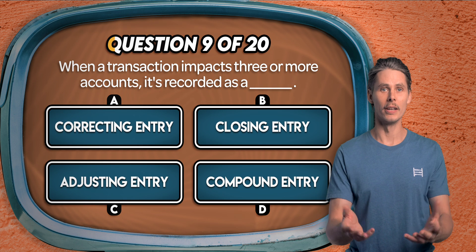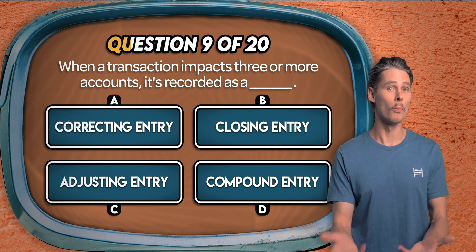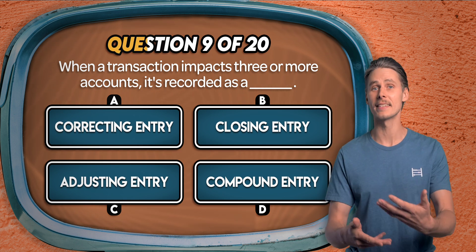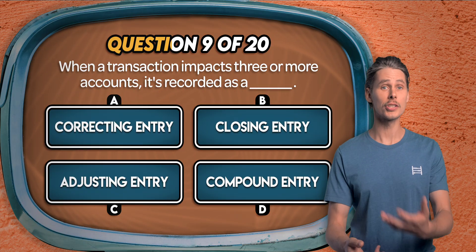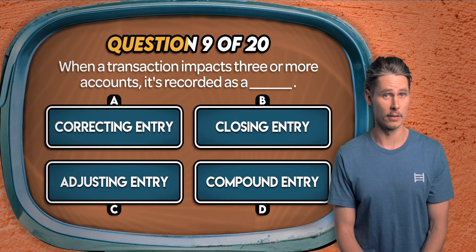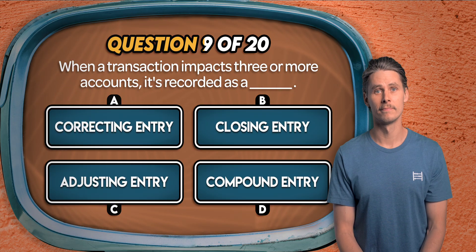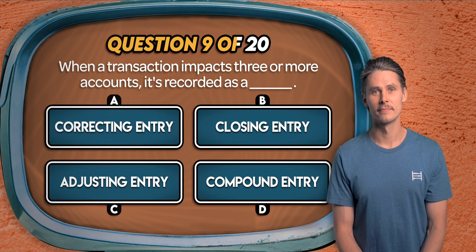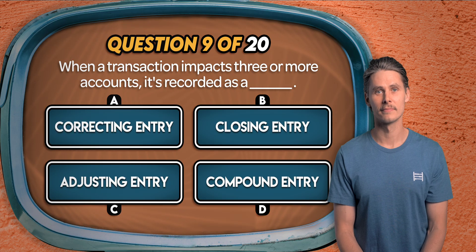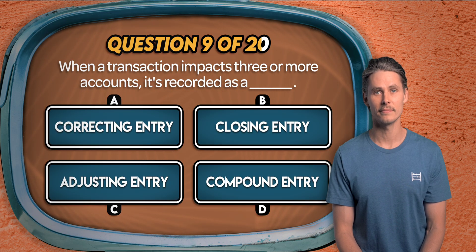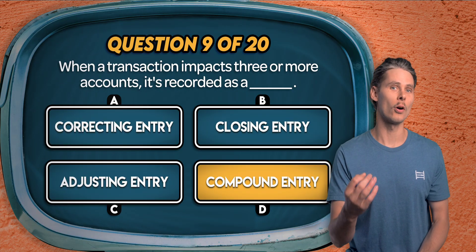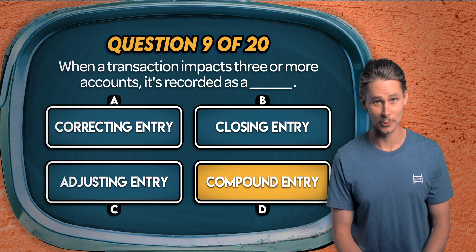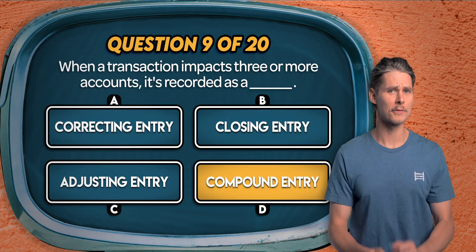Question 9. When a transaction impacts three or more accounts, it's recorded as: a correcting entry, a closing entry, an adjusting entry, or a compound entry? It's D. Compound journal entries involve three or more accounts, but they still have to balance.